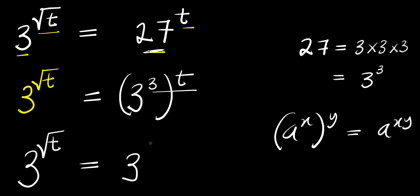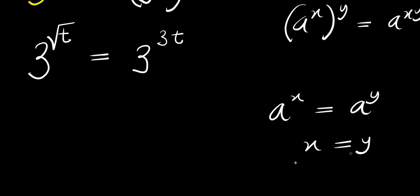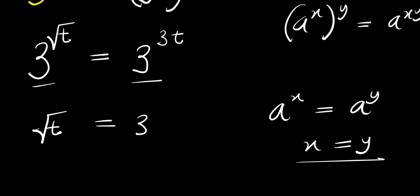Equals 3 power 3t. Now if you have a power x equals a power y, that means x equals y. So these exponents are equal, and we can have square root of t equals 3t.